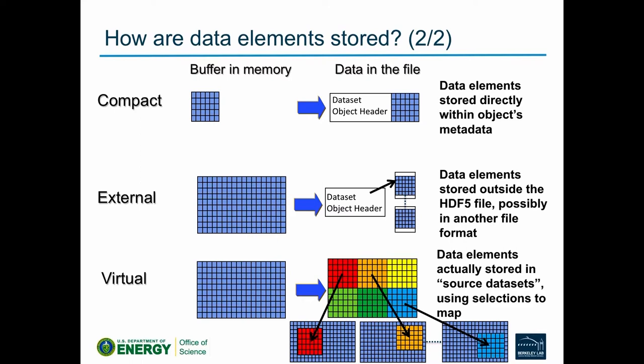You can also extend chunked datasets. The other storage formats — not supported in parallel — include compact storage: for very tiny datasets you can store the array elements directly in the dataset object header. The metadata and raw data get read in one I/O request into memory and cached, so subsequent accesses read directly from memory. It only works for very small datasets — you don't want to accidentally cache a gigabyte.